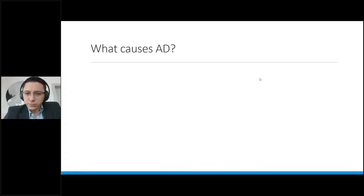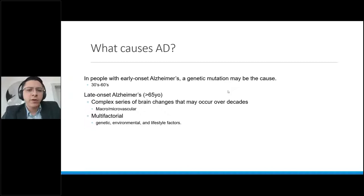Now, what causes Alzheimer's disease? Reality is, we don't really know. But we have a few theories that have been proven helpful, especially in the treatment domain. In people with early onset Alzheimer's disease, this is folks that are between their 30s and 60s, a genetic mutation may be the cause. We'll talk a little about which genes are involved. Regarding late onset Alzheimer's disease, for folks that are older than 65 years of age, complex years of brain changes, both macro and microvascular changes. Essentially, it is a multifactorial disease. It means genetic, environmental, and lifestyle factors will increase the chances of someone presenting with Alzheimer's disease.